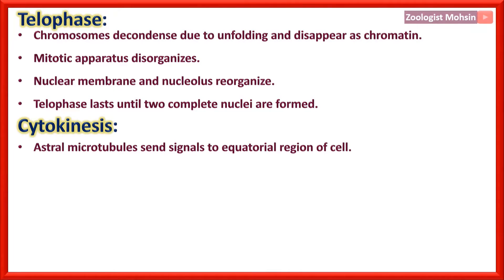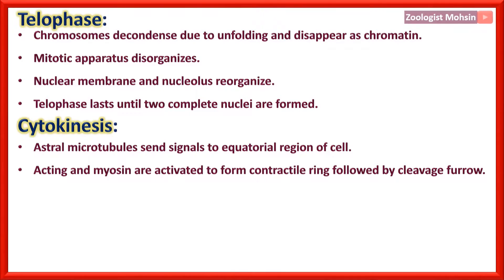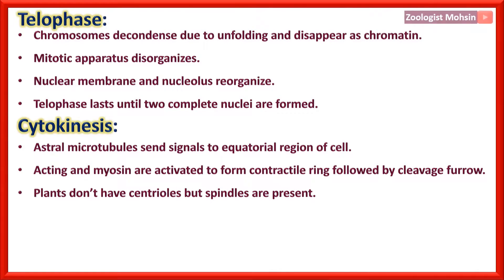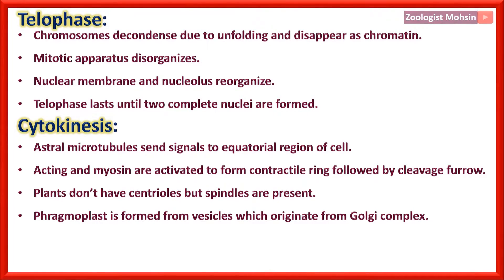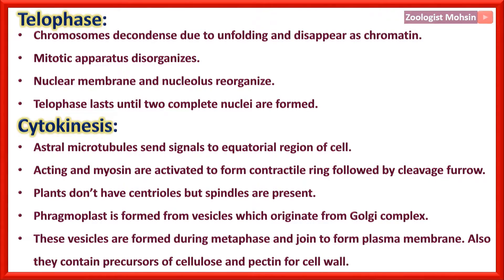Cytokinesis: Astral microtubules send a signal to the equatorial or central region of the cell. Actin and myosin proteins are activated in the center to form a contractile ring, followed by a cleavage furrow. Plants do not have centrioles but spindles are still present. A phragmoplast is formed from vesicles originating from the Golgi complex — this MCQ has already been asked in past papers. These vesicles are formed during metaphase and join to form the plasma membrane, containing precursors of cellulose and pectin for the future cell wall.